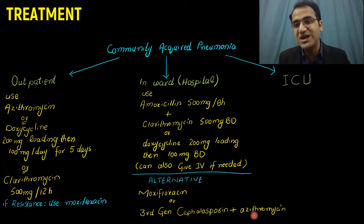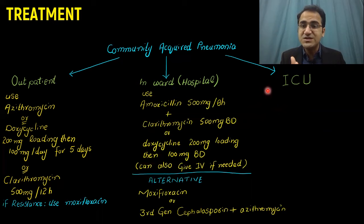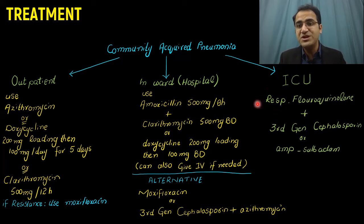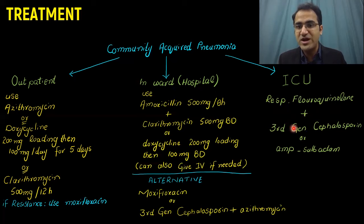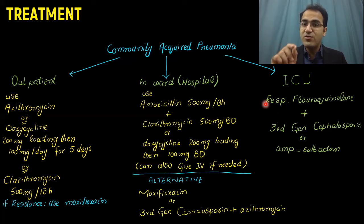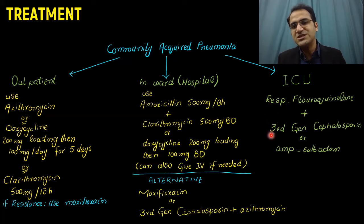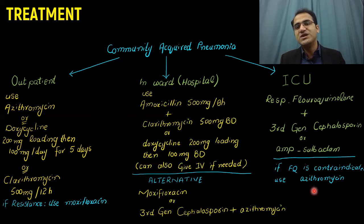For patients with CURB-65 greater than 3, ICU admission must be considered. These patients need stronger antibiotics and combination therapy: a respiratory fluoroquinolone (moxifloxacin or levofloxacin — not ciprofloxacin) combined with a third-generation cephalosporin like ceftriaxone, or with ampicillin-sulbactam instead of the cephalosporin. If fluoroquinolone is contraindicated, use azithromycin in its place.